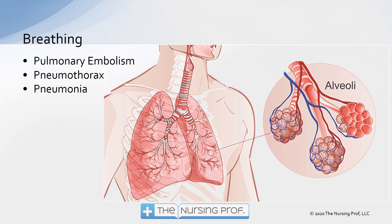Next we think about breathing, following our ABCs. Problems that can cause tachycardia as a result of a breathing problem include pulmonary embolism — a vascular problem, not an airway problem — where a blockage of the pulmonary vasculature causes blood to back up into the heart, increasing pressure and triggering tachycardia. A pneumothorax can also increase thoracic pressure, decrease cardiac output, and stimulate tachycardia. Pneumonia, through fever or other signs of infection, can also result in tachycardia.